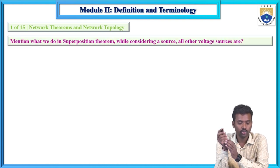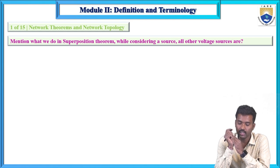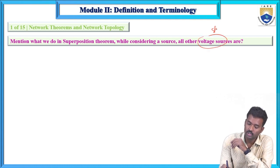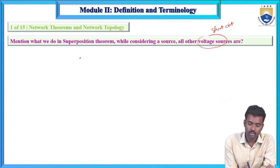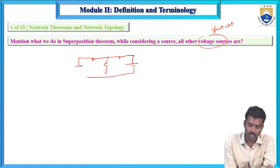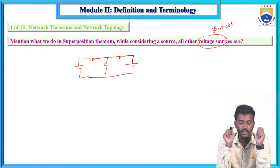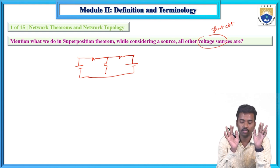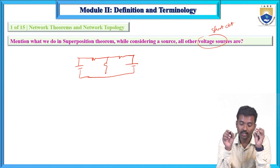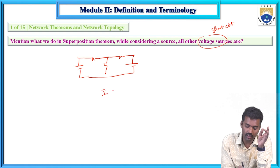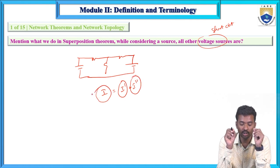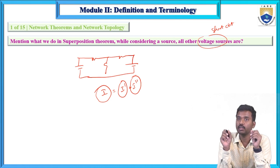First, mention what we do in the superposition theorem while considering a source and other voltage sources. Voltage sources are replaced by short circuit and current sources are replaced by open circuit. To apply the superposition theorem, we need at least two sources — it is applicable for multi-source networks, not single-source networks. The total response equals the sum of the individual responses: I = I' + I''.